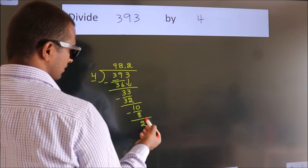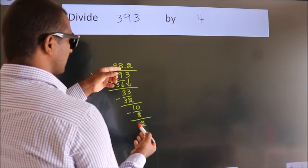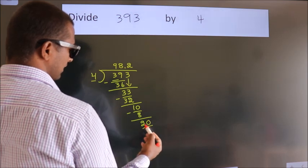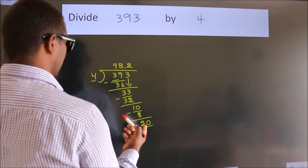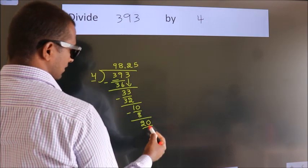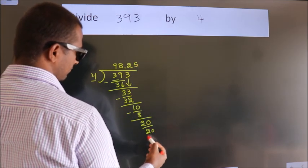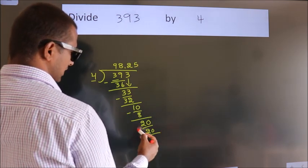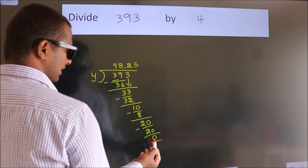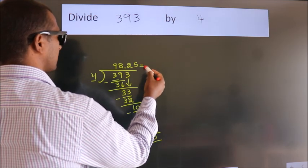After this, we already have the decimal. So, directly take 0. So, 20. When do we get 20? In 4 table, 4 5s 20. Now, we subtract. We get 0. We got remainder 0. So, this is our quotient.